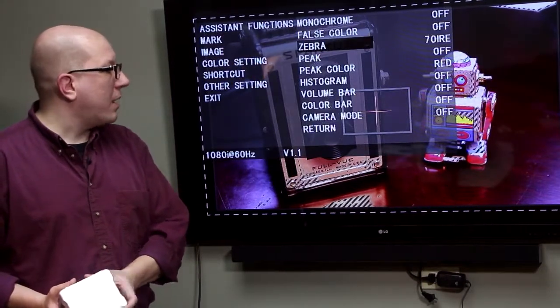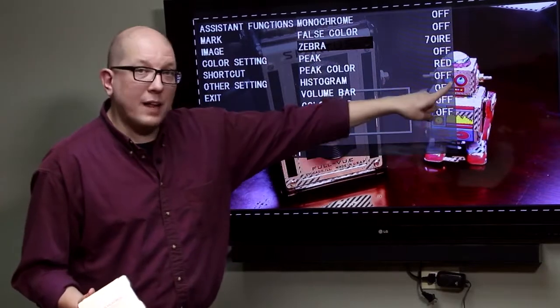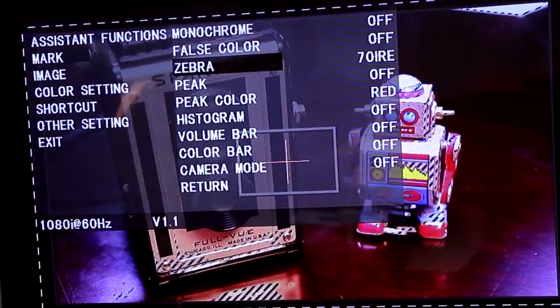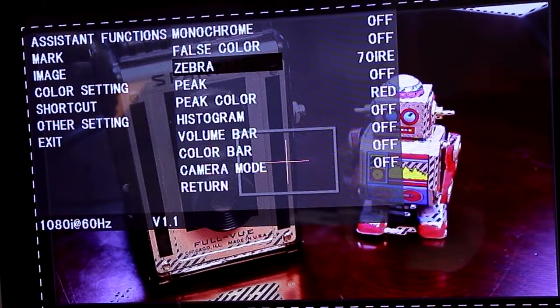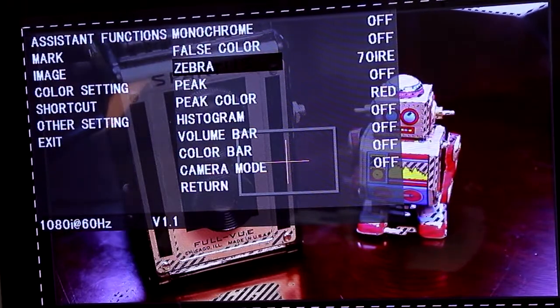Zebra, every good camera has this built in. You see the little marching ants that are on the bright parts of the image? That can help you if you're trying to really target what's going to maybe blow out if you're overexposed.